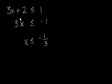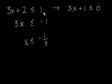We could have actually done this equation in a slightly different way. What if we subtracted 1 from both sides? So 3x plus 1 is less than or equal to 0. I just subtracted 1 from both sides.